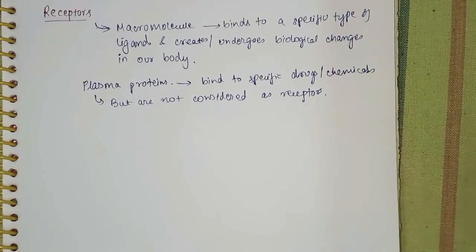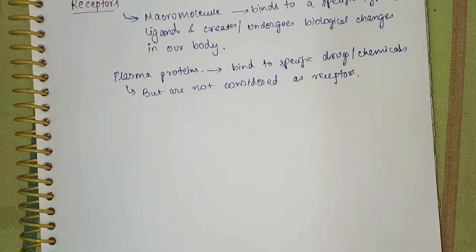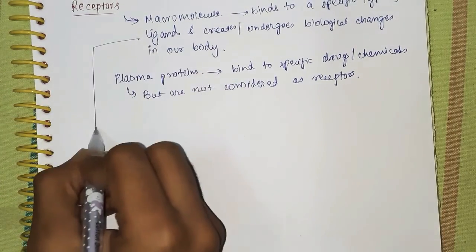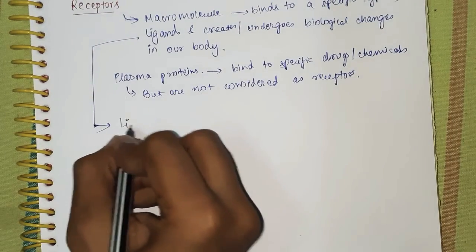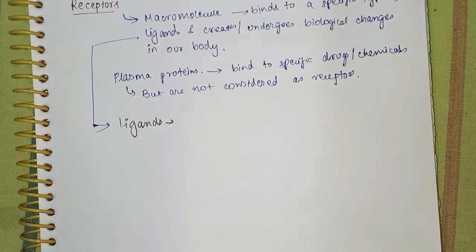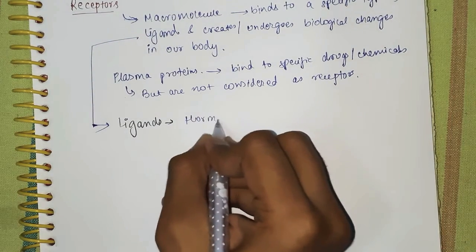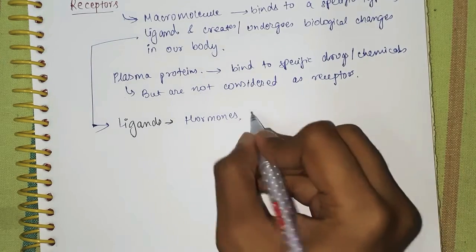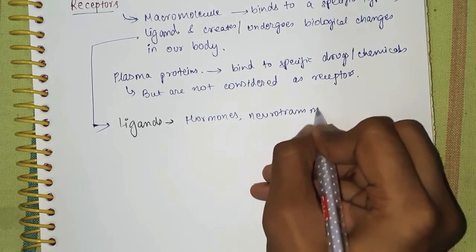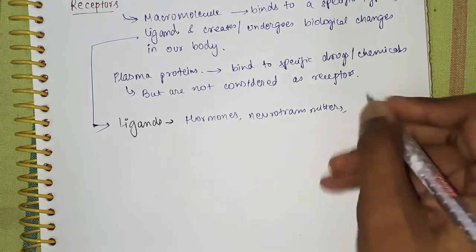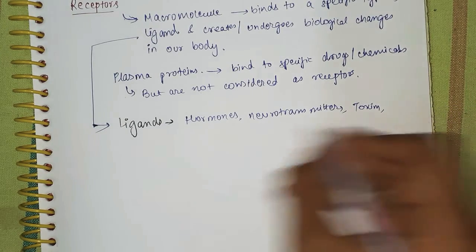Since receptors bind with ligands, we should also know what ligands are. Ligands are actually hormones, and they can be other chemicals such as neurotransmitters, certain toxins, and other chemicals.